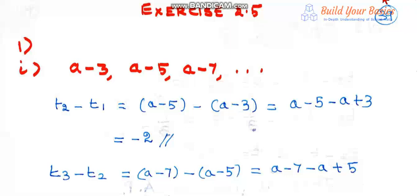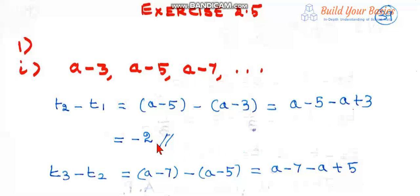Exercise 2.5, question number one: check whether the following sequences are in AP. First substitution: a minus 3, a minus 5, a minus 7. First term t1 is a minus 3, second term t2 is a minus 5, third term is a minus 7. Now t2 minus t1, that is second term minus first term, is a minus 5 minus of a minus 3, that is a minus 5 minus a plus 3, the a cancels, giving minus 2. So t2 minus t1 is minus 2.